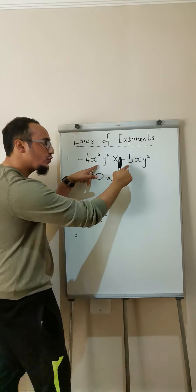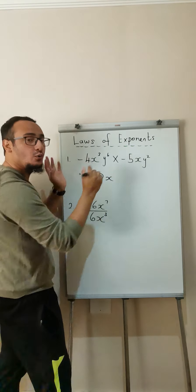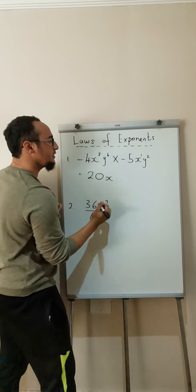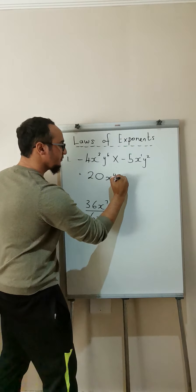And remember, because this is law number 1, I'm multiplying but I have the same base. What happens to my exponents? They add. So the 3 plus 1 will be equal to 4.